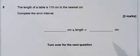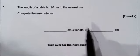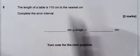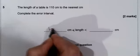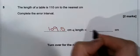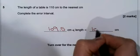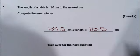The length of the table is 110 cm to the nearest cm. To find the error interval, we need to look for the two numbers that, when rounded, give the answer 110. These are 109.5 and 110.5.